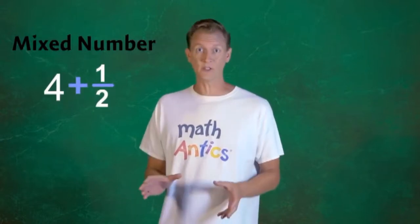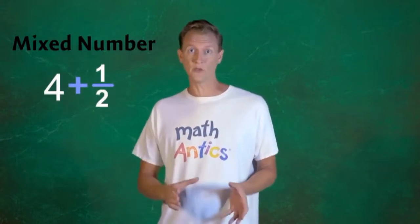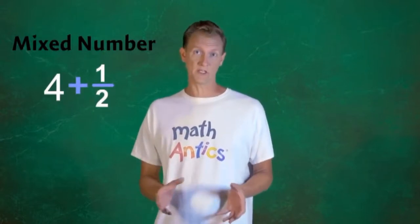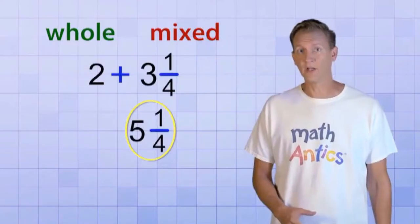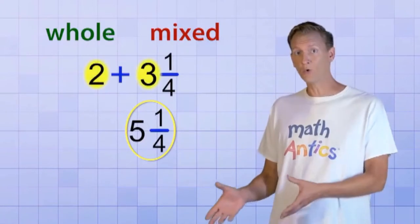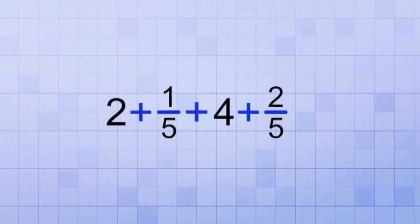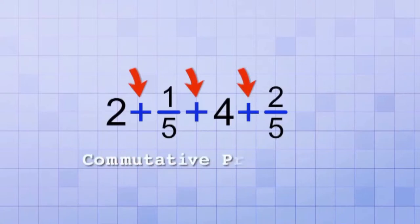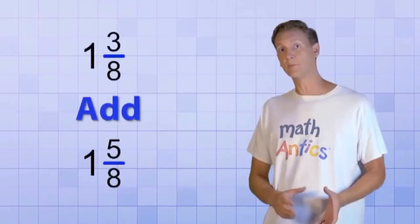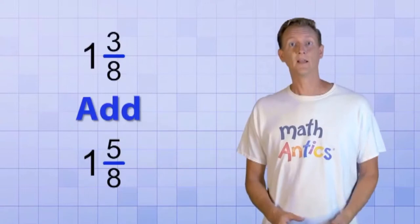Even though one symbol isn't usually shown between those two parts of a mixed number, you can just add the whole number parts and you're not going to miss. Because all of these parts are being added, and addition has the commutative property. It really doesn't matter what part we've done together.